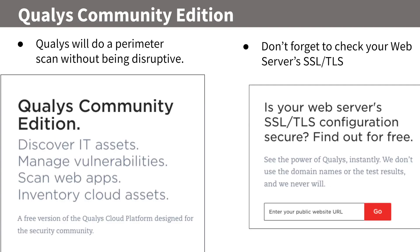There also is the Qualys Community Edition. It does non-disruptive scans on your perimeter, so if you just want to check out some of the same information and get actionable data on open ports and things like that. There's also a great free tool you can run on your web servers to make sure that you have TLS properly configured. You should be using TLS 1.2 or above, do not use CBC mode, and ensure that TLS 1.1, 1.0, or below are disabled.